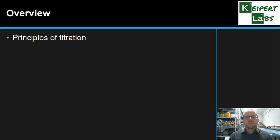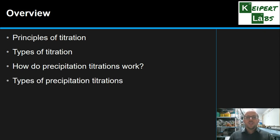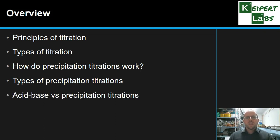We're going to start by reviewing the principles of titration. We're going to look at the different types of titration that exist to put things in context. We're then going to look at how precipitation titrations actually work, go through the different types of variations of precipitation titrations, and then compare precipitation titrations versus traditional acid-base titrations that you might be more familiar with.